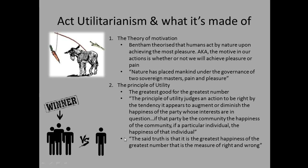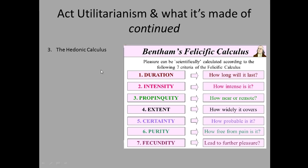Third is the hedonic calculus — Bentham's way of measuring pleasure. At school we use the mnemonic PREDICT to remember its elements: P is Purity, R is Remoteness (proximity), E is Extent (added later by John Stuart Mill for rule utilitarianism, but include it anyway), D is Duration, I is Intensity, C is Certainty, and T stands for 'to be followed by' — the propinquity element. The quote for the hedonic calculus is: 'Pleasure is the chief good.'